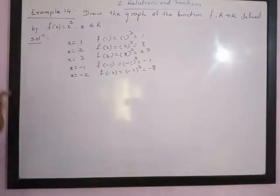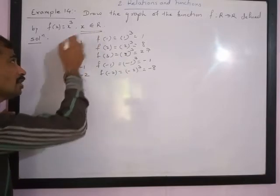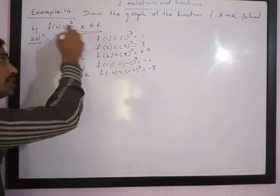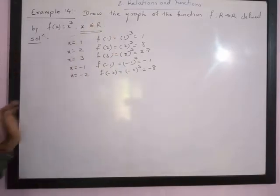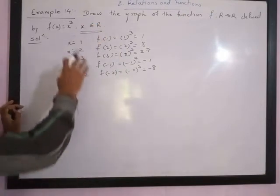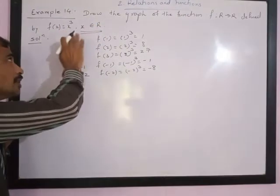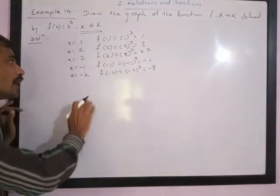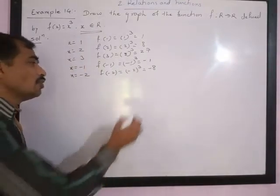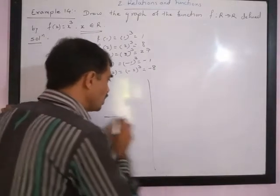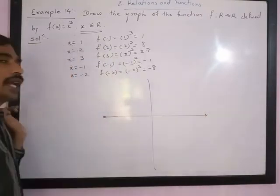Please note: x belongs to real numbers means x can have all values — rational values as well as irrational values. So x can have root 2, fractions, negative fractions, positive fractions. If you try to plot the graph, all real numbers can be plotted on the number line, as we have already studied.